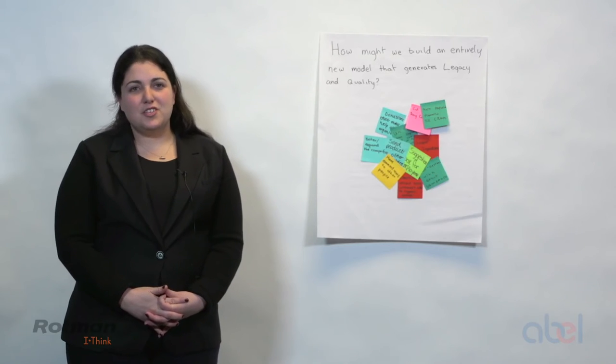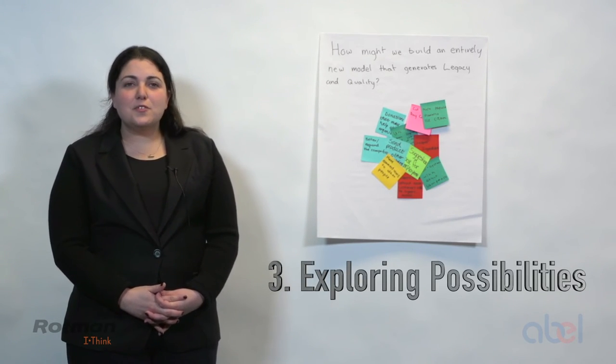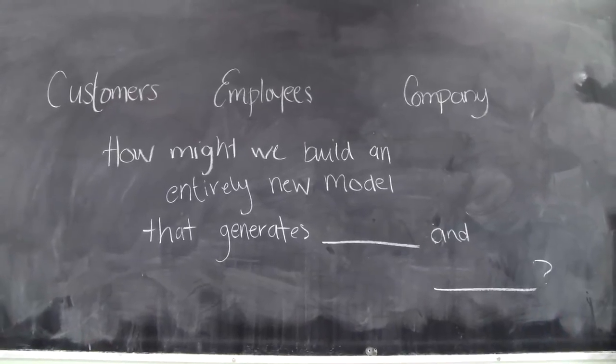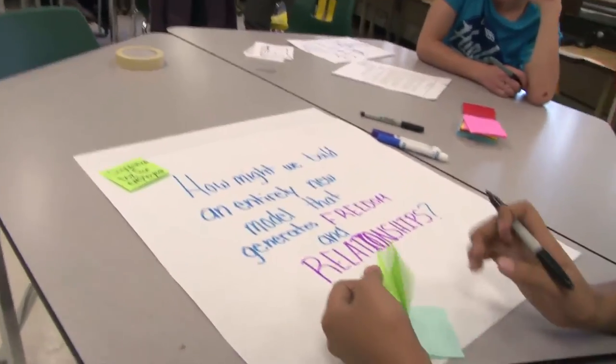The third step in the integrative thinking process is exploring possibilities. And this is about starting to imagine, what might a better answer look like? What else might be possible?